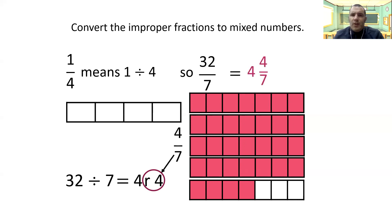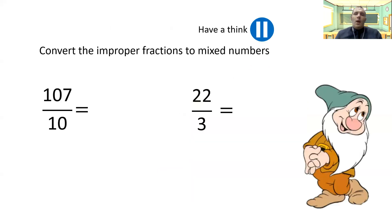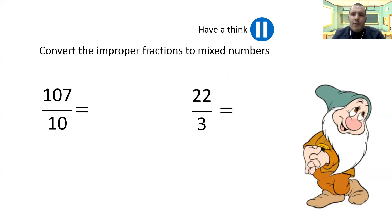So 32 sevenths is the same as, or equivalent to, four and four sevenths. Have a go at these — let's see how well you can get on. Just to remember: you're dividing the numerator by the denominator, and whatever your remainder is will be the number that goes above the denominator for your mixed number. Have a go at these now.